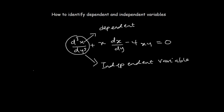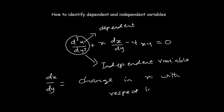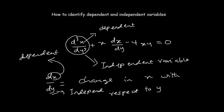Let's look at why they are called dependent and independent variables. If I write x over y, we can read this as the change in x with respect to y, which means that x only changes when y changes. So therefore, x is dependent on the variable y — if y doesn't change, then x will not change. That's why x becomes the dependent variable and y becomes the independent variable.